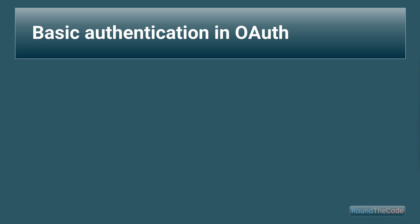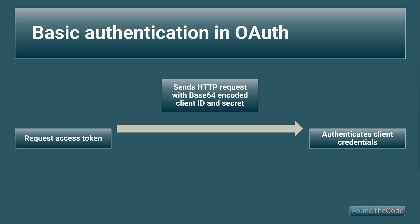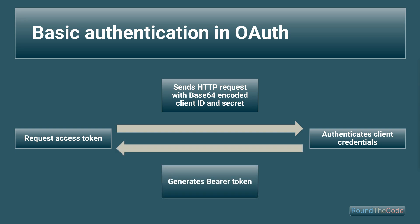Basic authentication can be used as part of the OAuth authentication when requesting an access token. This happens with the client credentials flow where the client ID is used for the username and the client secret is used for the password. The client calls an API endpoint on the server which contains the base64 encoded hash of the client ID and secret. The server decodes the hash and authenticates the client credentials. On successful authentication, an access token is generated in the form of a bearer token, which is used for authentication across other API endpoints.